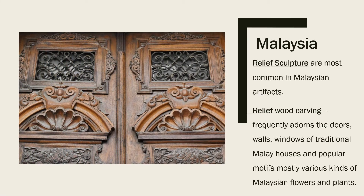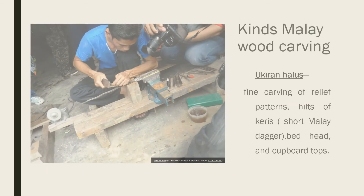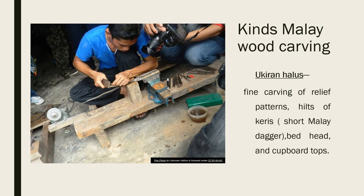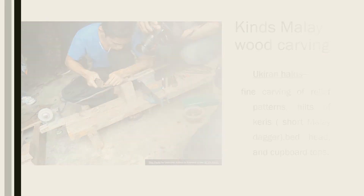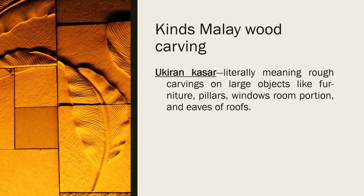Malaysia has its own sculpture tradition. Relief sculptures are most common in Malaysian art. Relief wood carving frequently adorns the doors, walls, and windows of traditional Malay houses, with popular motifs including various kinds of Malaysian flowers and plants. Kinds of Malay wood carving include Ukiran halus — fine carving of relief patterns on hilts of keris, short Malay daggers, bedheads, and cupboard tops — and Ukiran kasar, meaning coarse carvings on large objects like furniture, pillars, windows, room partitions, and eaves of roofs.